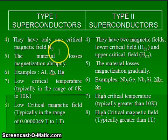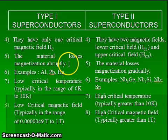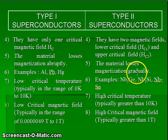In case of type 1 superconductors, the material loses its magnetization abruptly, whereas in case of type 2 superconductors, the material loses its magnetization gradually.